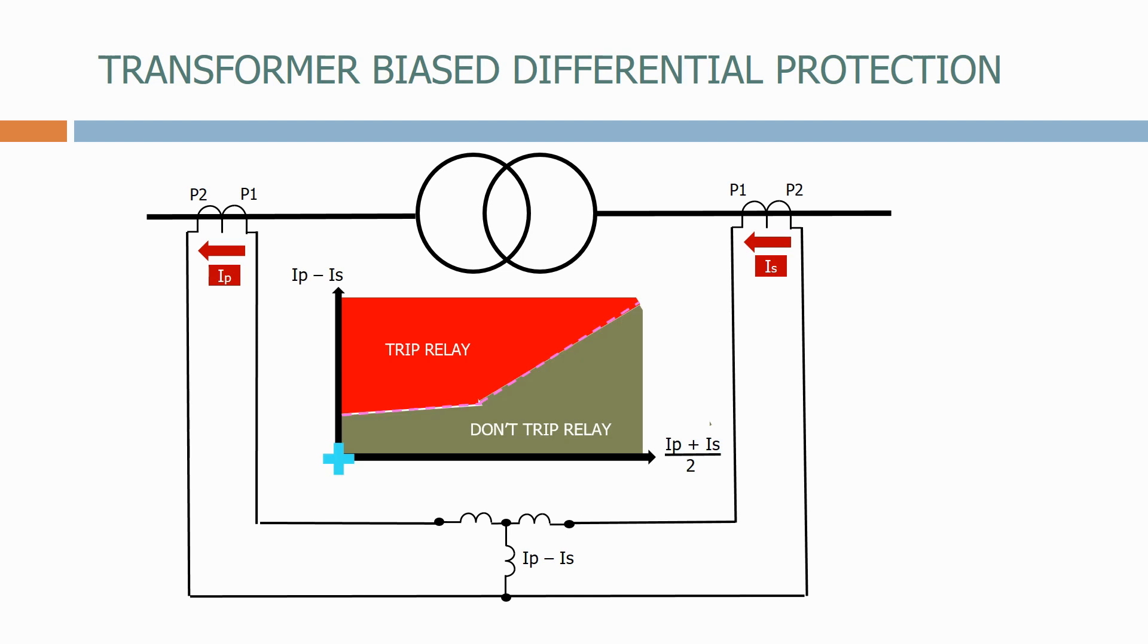Let's now energize the transformer. As the primary and secondary currents go up and down, we move around the bottom of the don't trip zone.